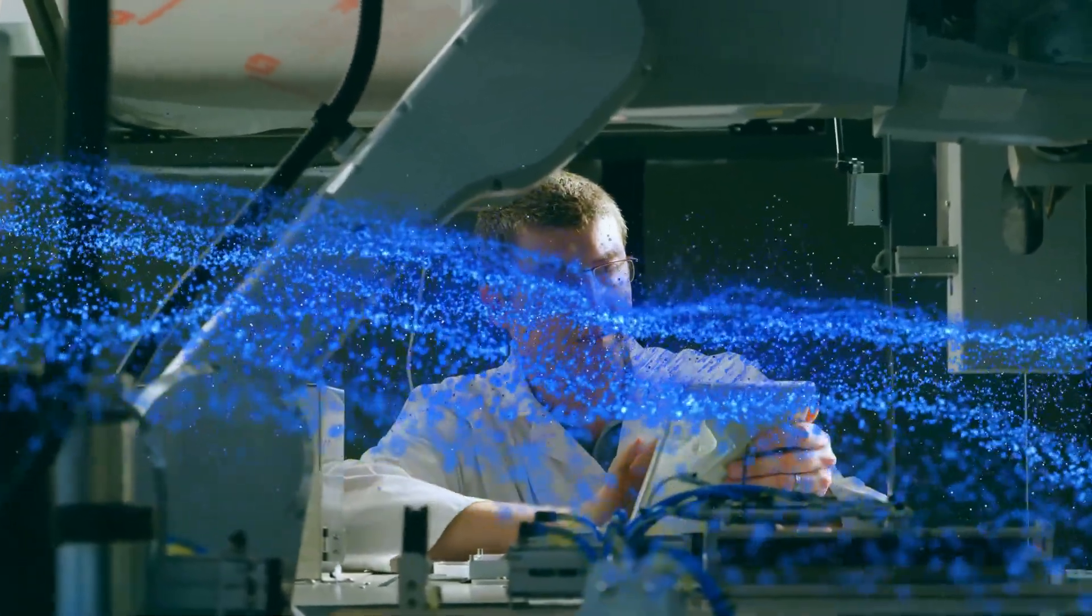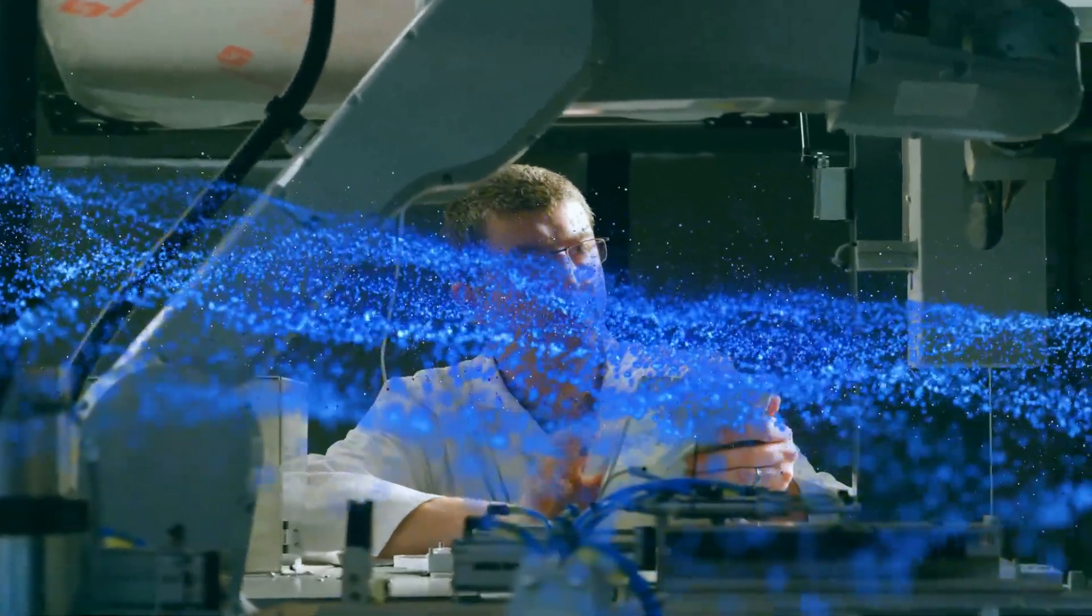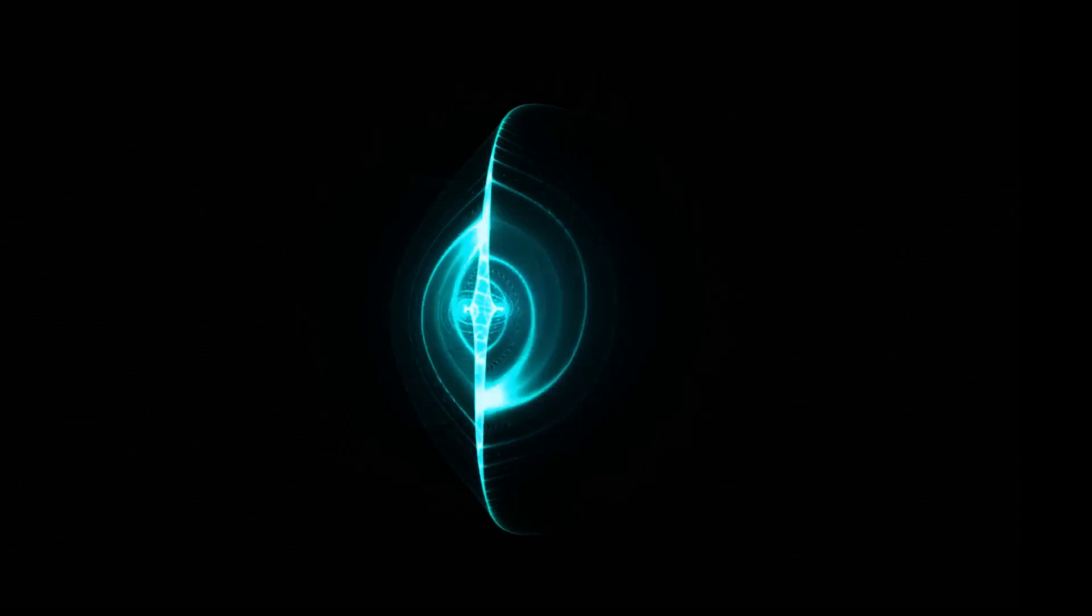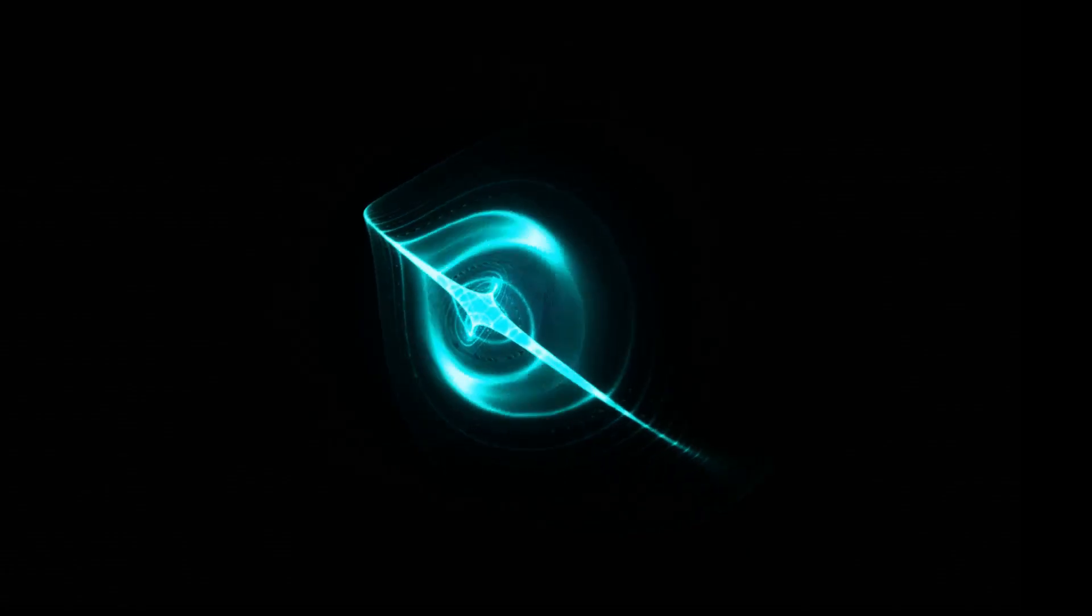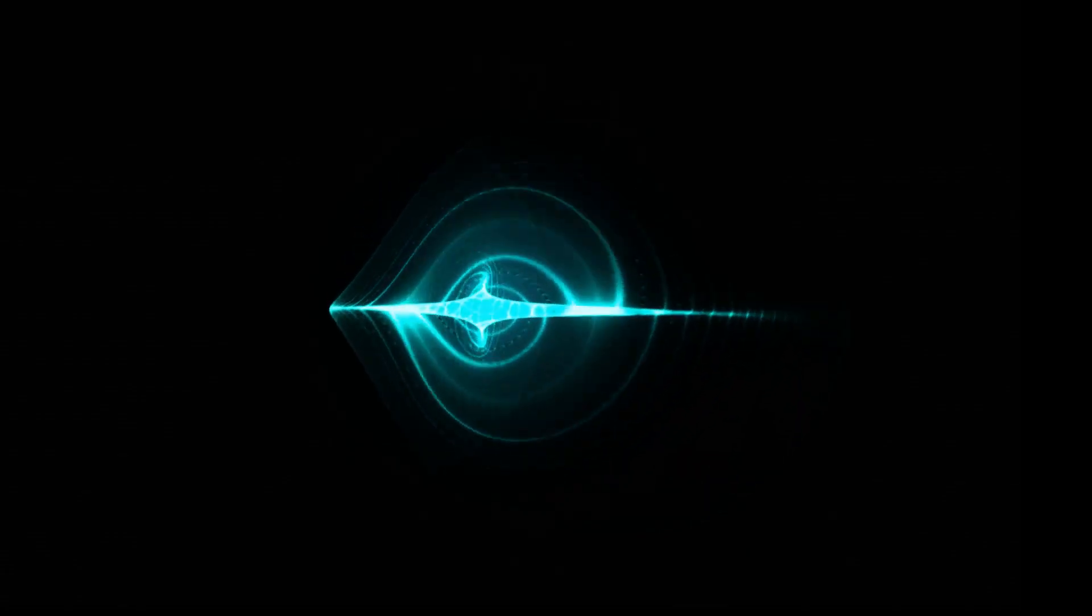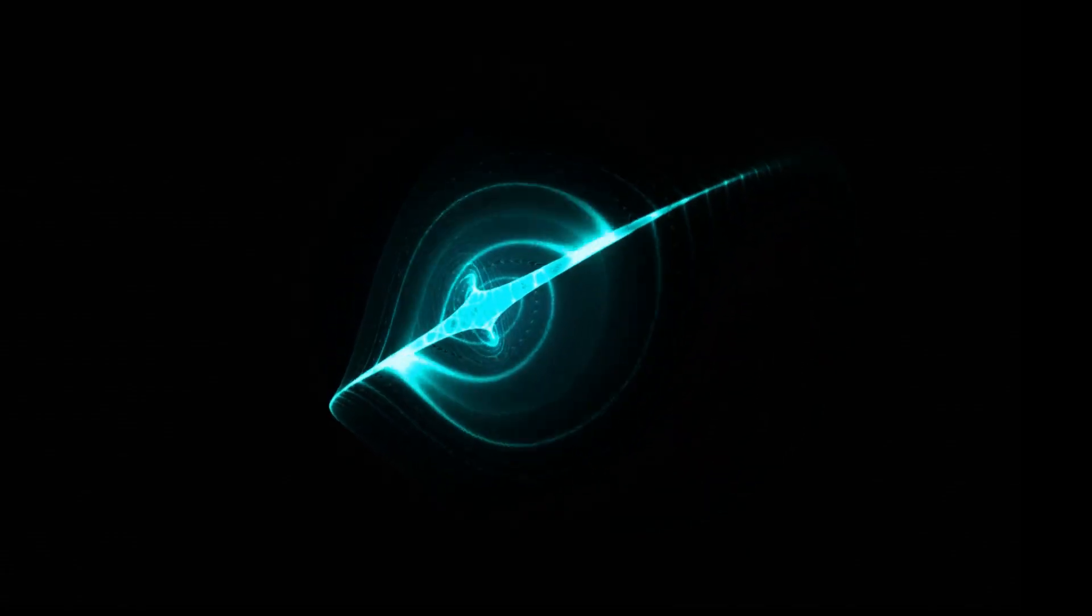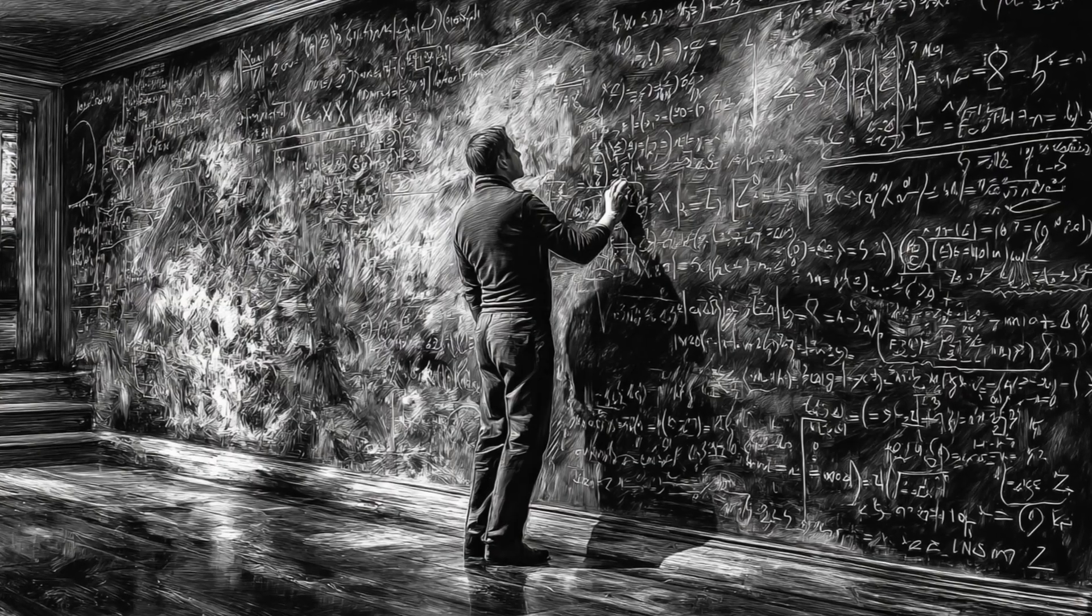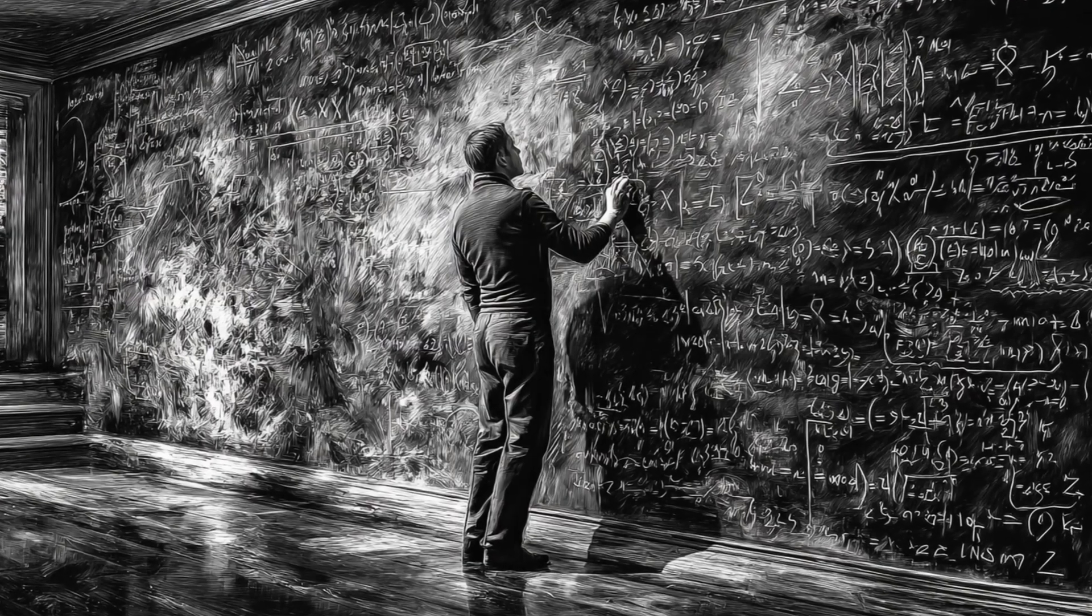We already have proof that the vacuum is not inert. The Casimir effect is one of the most famous demonstrations: place two uncharged metal plates just a few nanometers apart in a vacuum, and they are pushed together by the pressure of virtual particles popping in and out of existence. This is not science fiction. It's been measured with extreme precision in laboratories.